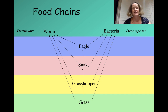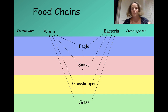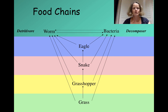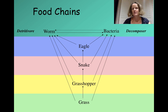Decomposers perform a similar function to a detritivore — they're eating the dead and decaying material — but instead of just breaking them into smaller pieces, they actually break them into nutrients that can be recycled and taken up by the plants. A decomposer is acting on a microscopic level; you can't see them with the naked eye. A worm can die and be decomposed by bacteria or fungi, and bacteria and fungi can be eaten by worms, so food chains are a simplification of a much more complex system.